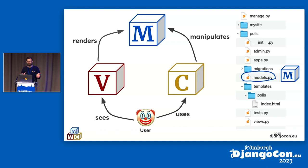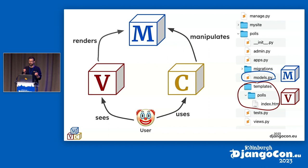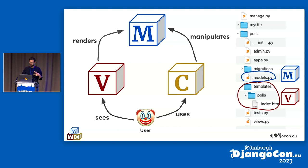Now it gets a little bit tricky. There is a terminology mismatch in Django that makes it difficult to talk about MVC in the context of Django. If you accept the definition that a view is what a user sees, then what makes sense is to say the templates are actually the view in the MVC sense within Django — because templates take models and render them for a user. And where is the controller? If you accept that the controller is what takes user input and manipulates models, then that's actually what a Django view does. The closest equivalent in Django to the controller is what Django calls a view.